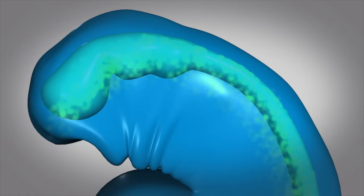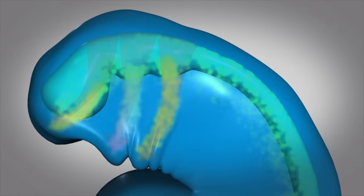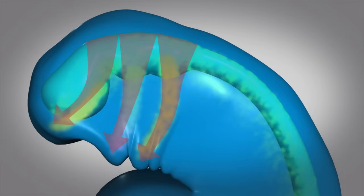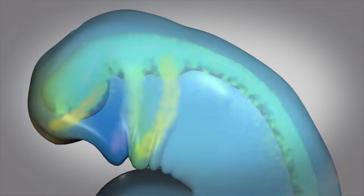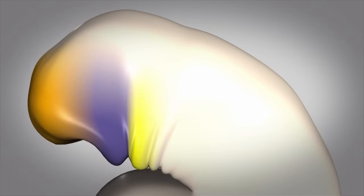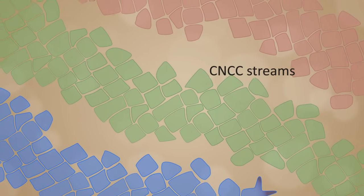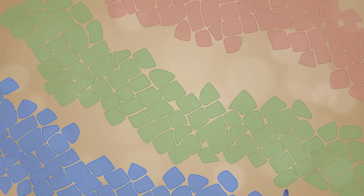These cells multiply and soon start migrating over long distances in distinct paths from the back of the embryo towards the front of the embryo. Once they arrive at their target destinations in the facial regions, CNCCs further develop and mature and ultimately contribute to a substantial amount of the structures in the head and neck region, such as bones, cartilage, and nerves. Growth, migration, and subsequent differentiation of CNCCs are critically important for proper development of the normal structures of the facial region.